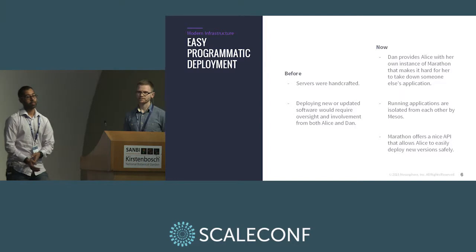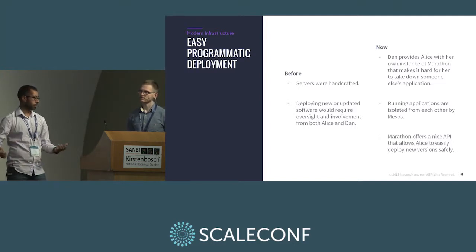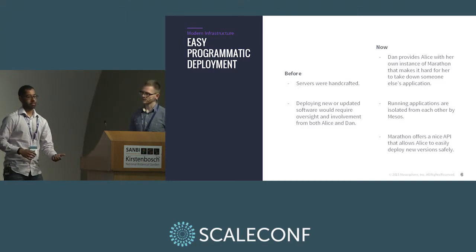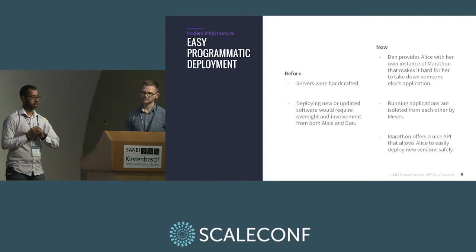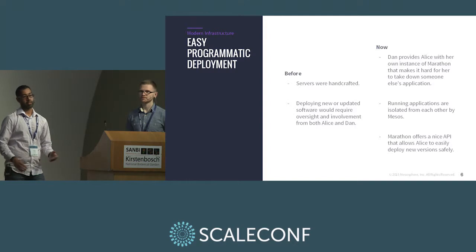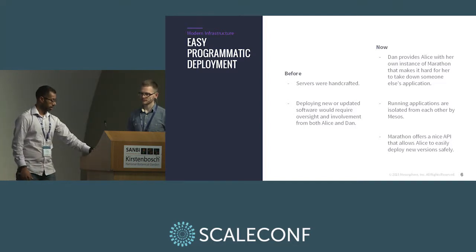Programmatic deployment: once you're using something like Mesos and Marathon, you can do lots of cool things. You can segregate all your developers from each other — Alice 1 gets her own instance of Marathon, Alice 2 gets her own. Each one can deploy applications to Marathon independently. You don't need to update your entire cluster every time someone wants to update their application. This makes Dan's life easier because users are helping themselves instead of raising a ticket for him every time they want a new version in production.